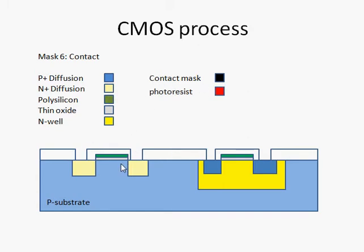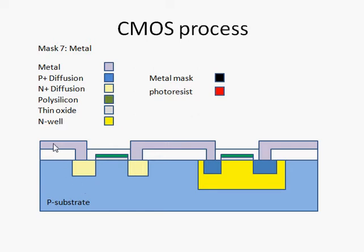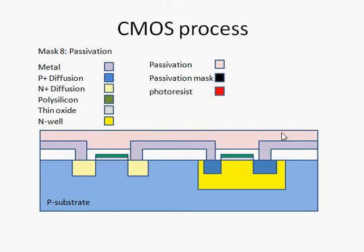The electrical connections are made by metal — very similar to the wires one would use when connecting up a normal circuit. The metal mask defines the way the metals are used to connect the devices together. Finally, we deposit a passivation layer to protect the chip from environmental effects such as corrosion.